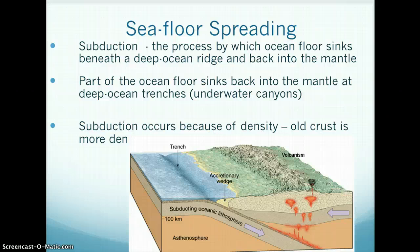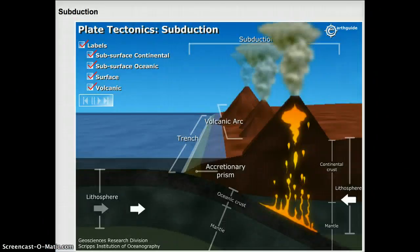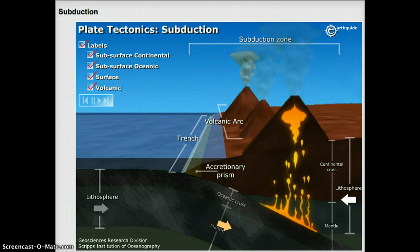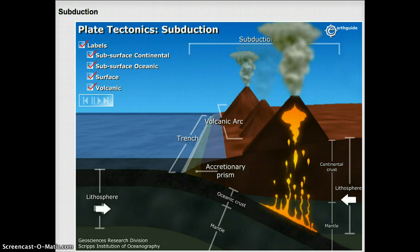Since new floor is being created, something has to happen to the old ocean floor. This process of the ocean floor sinking back down into the mantle is called subduction. Old ocean floor sinks under the mantle at deep ocean trenches, which are like underwater canyons. Subduction occurs because of density — the old crust is more dense than the new crust, so it sinks under into the mantle. This animation demonstrates how old ocean crust is being pulled back under into the mantle at a subduction zone.